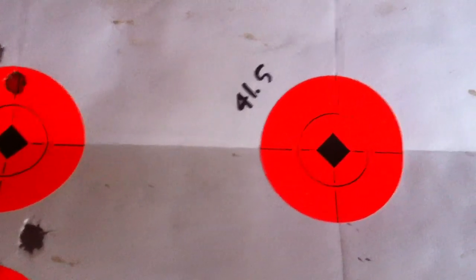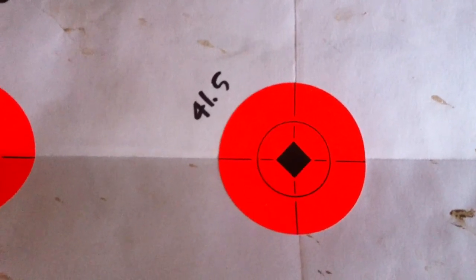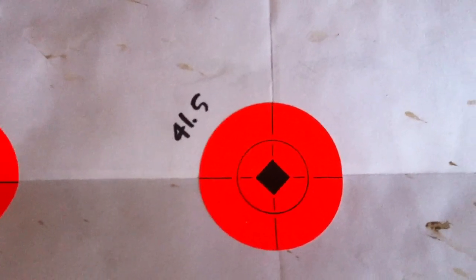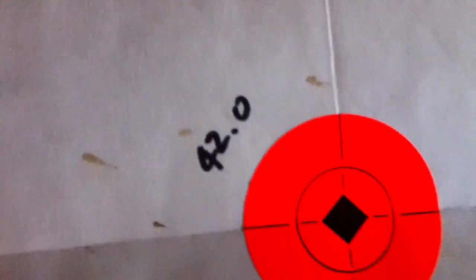And then this is my first workup. It was 41.5 grains of IMR 4064. Those are the three shots. I went to 42. Those are the three shots.